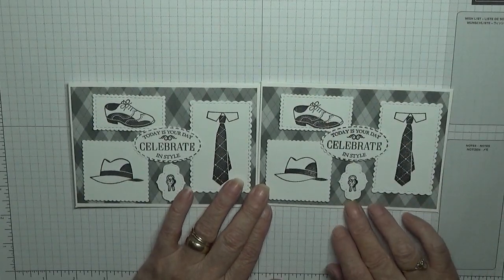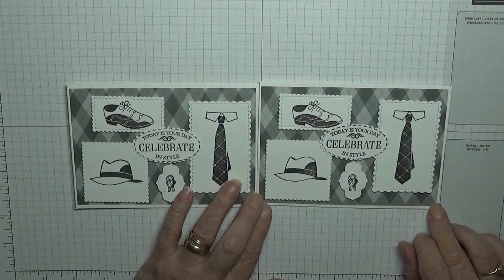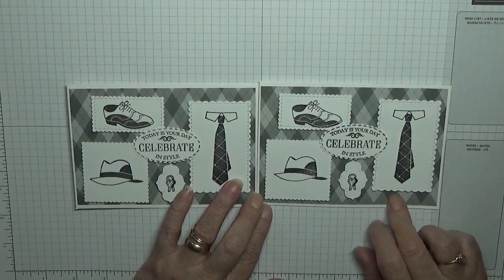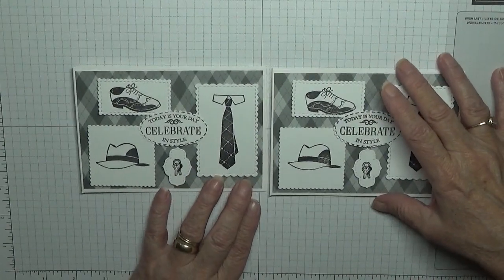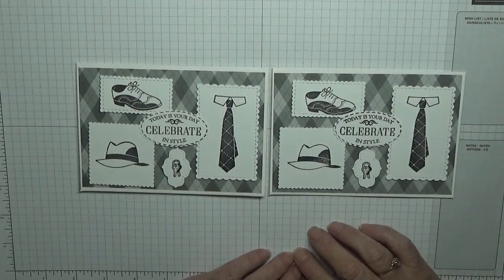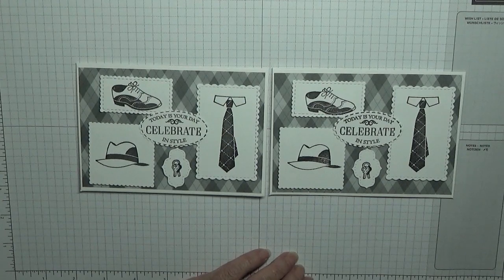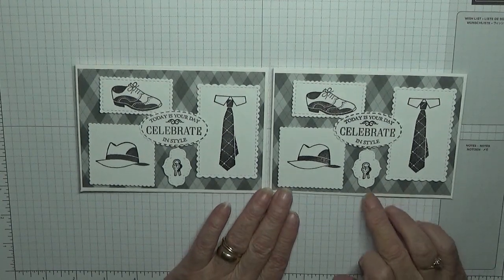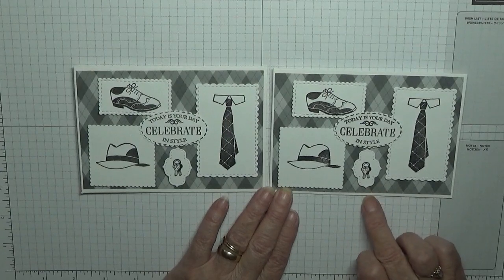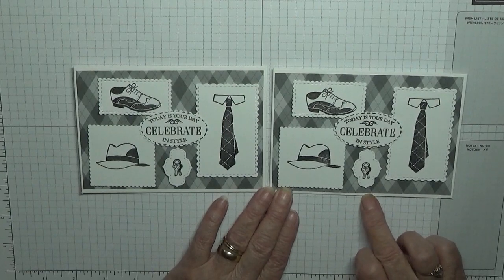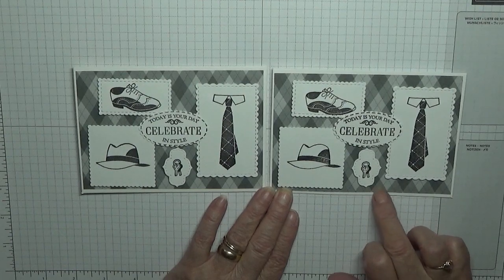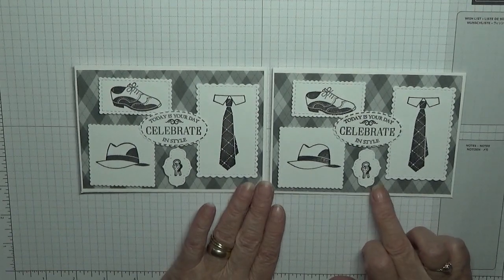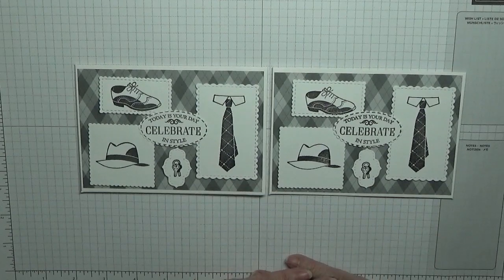Would have looked nicer on a smoky slate card base, but I only had a five and six by four piece. I didn't have enough to make a card base of smoky slate. Naughty me. But I think that would look nice on a smoky slate card base with a white mat and then the paper on top of the white. But it looks nice like that I think. Hope you like it.